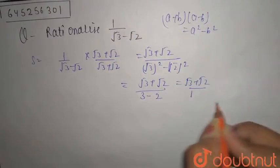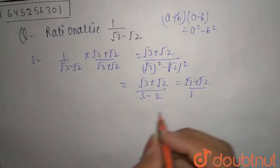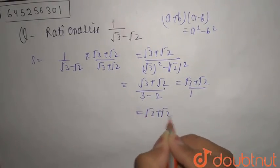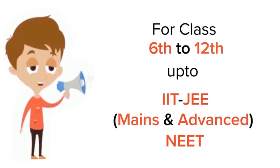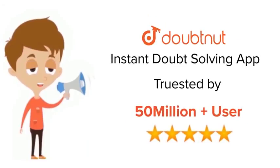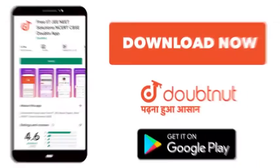Because 3 minus 2 is 1, so your answer will be root 3 plus root 2. I hope it's clear, thank you. For class 6 to 12, IIT-JEE and NEET level, trusted by more than 5 crore students. Download Doubtnet app today.